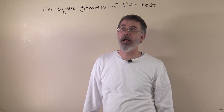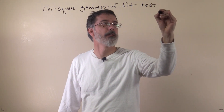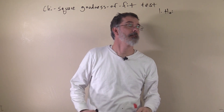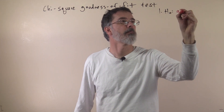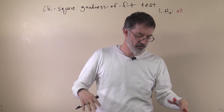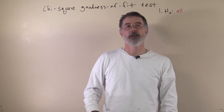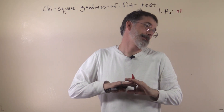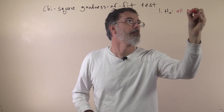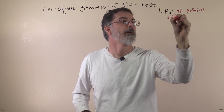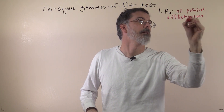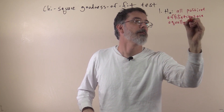We will go through the steps for a chi-square goodness of fit test. We will start with stating our null hypothesis. Our research hypothesis is that SU students are more likely to be Republican than other political affiliations. Our null hypothesis is that there is no difference amongst the political affiliations — all political affiliations are equally likely.